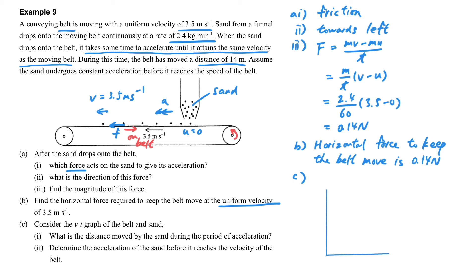Part C, we have to consider the Vt graph of the sand and the belt. So let's put down the axis of the Vt graph first. What is the Vt graph for the belt? Because it is moving with a uniform speed of 3.5 meter per second, it's just a straight line. The full straight line here represents the belt. The sand, because the initial velocity of the sand horizontally is 0, it starts from 0, and finally it will attain the same speed as the belt. So this is the Vt graph for the sand.